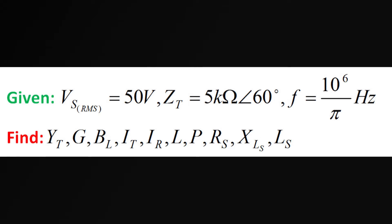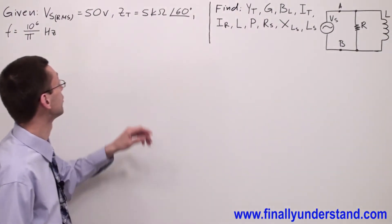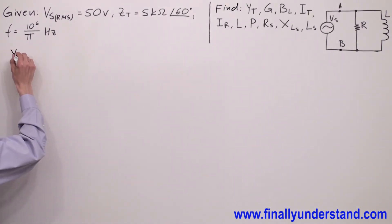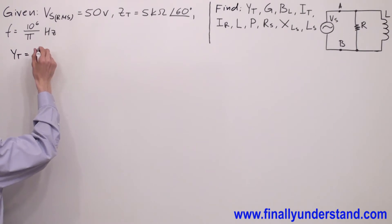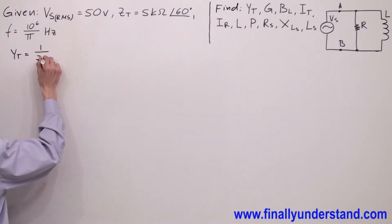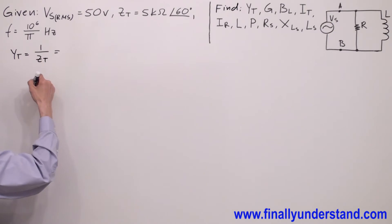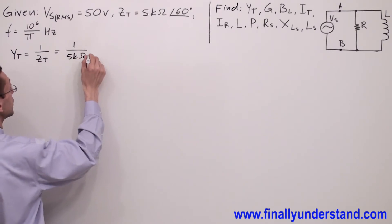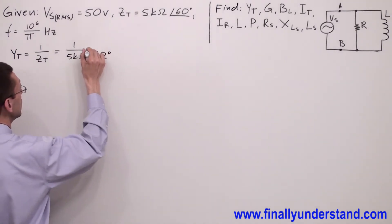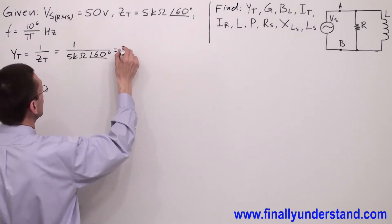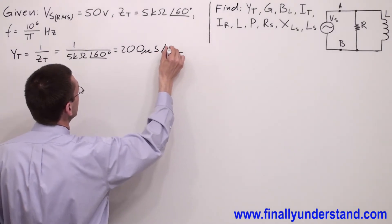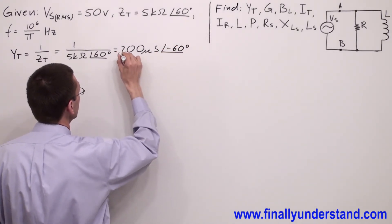We have another example on the board. We have to find total admittance. Please notice that we have been given total impedance. In order to find Y-total, I'm supposed to find the reciprocal of Z-total. So, 1 over Z-total equals Y-total. Therefore, 1 over 5 kΩ at an angle of 60 degrees equals 200 µS at an angle of negative 60 degrees. This is my total admittance.